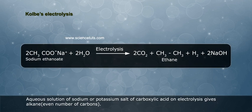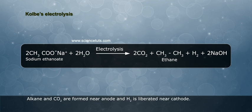Kolbe electrolysis. Aqueous solution of sodium or potassium salt of carboxylic acid on electrolysis gives alkane with even number of carbons. Alkane and CO2 are formed near anode and H2 is liberated near cathode.